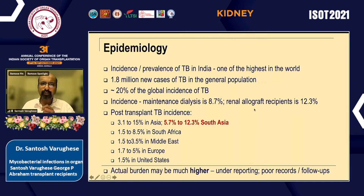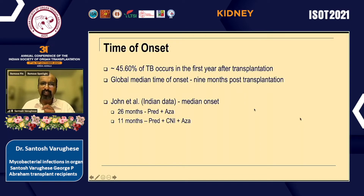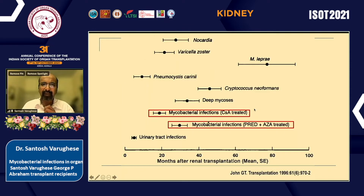Of the 1.8 million new cases globally, about 20 percent of global incidence is supposed to be in India, and it's as high as 12.3 percent in renal allograft recipients in South Asia. The actual burden may be higher than reported because of under-reporting and poor follow-up records. Most TB occurs in the first year, with a global median time of onset of nine months. Indian data shows that the median onset has shifted with the advent of CNI inhibitors, as shown by the landmark paper by Dr. John.